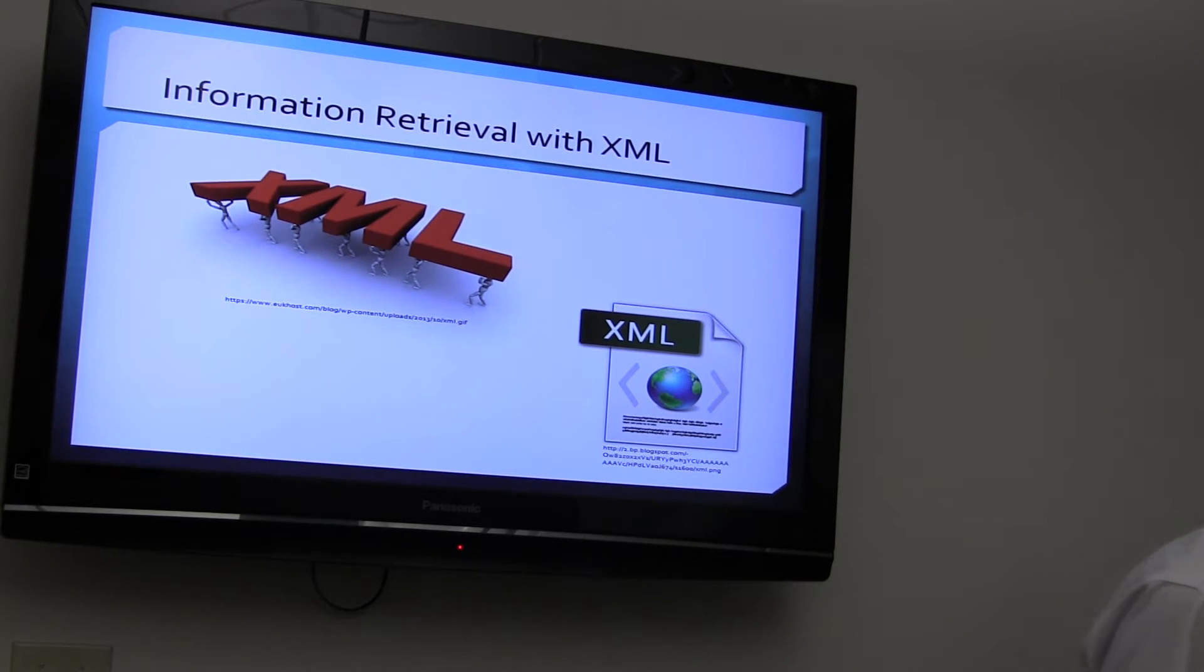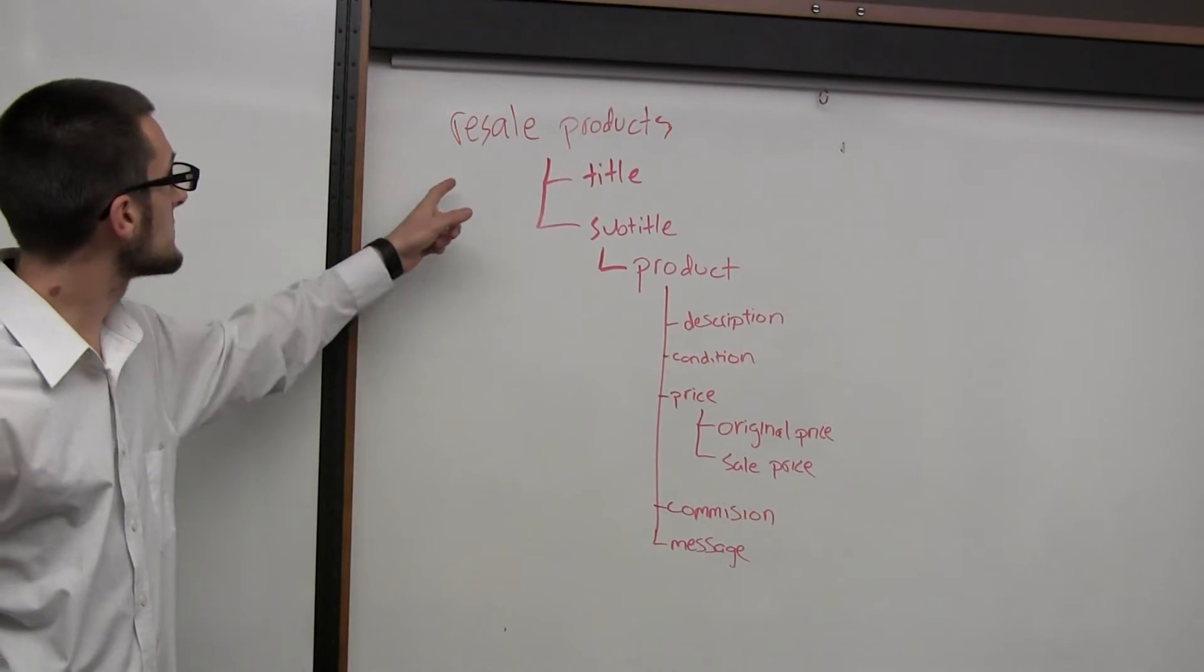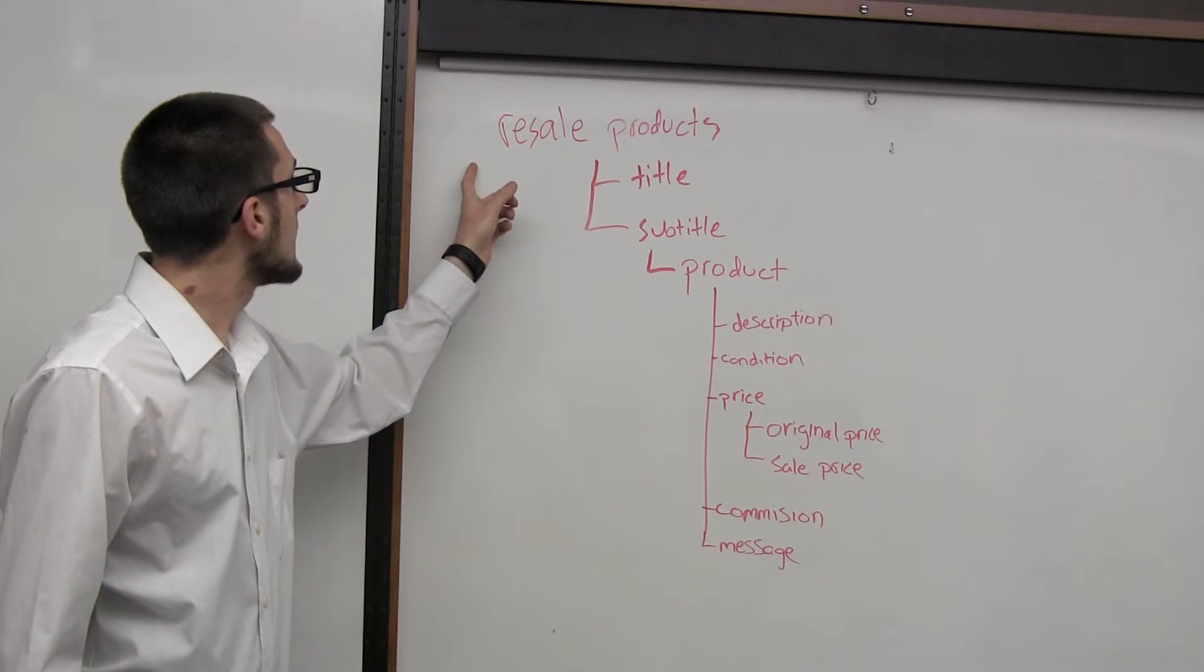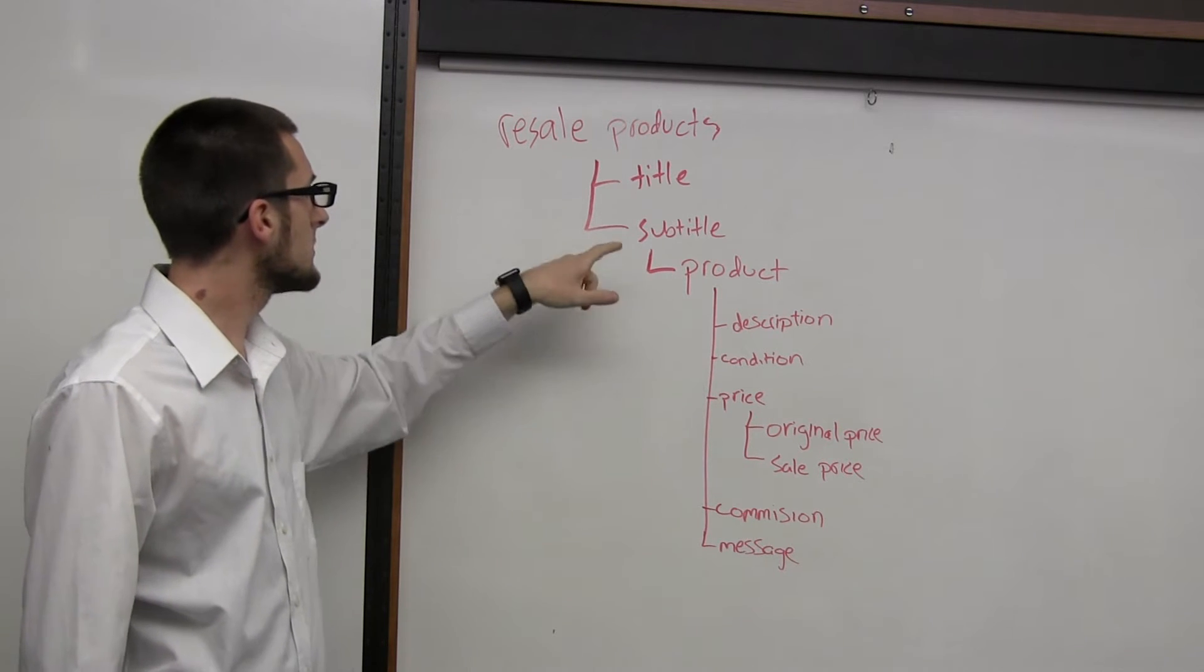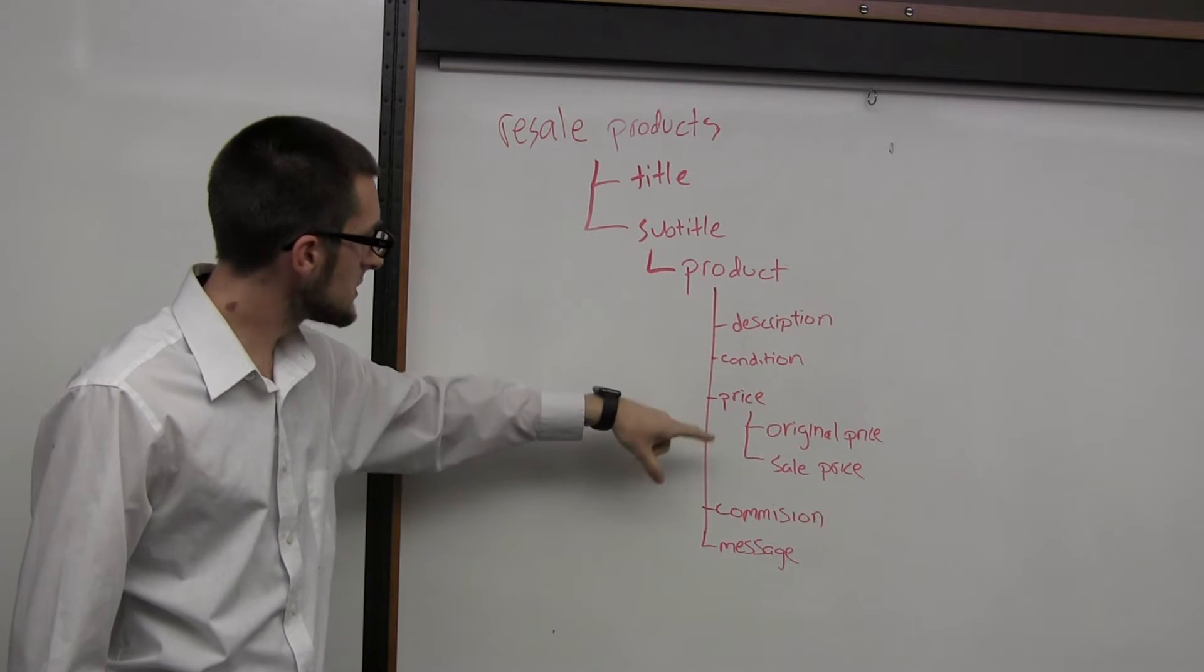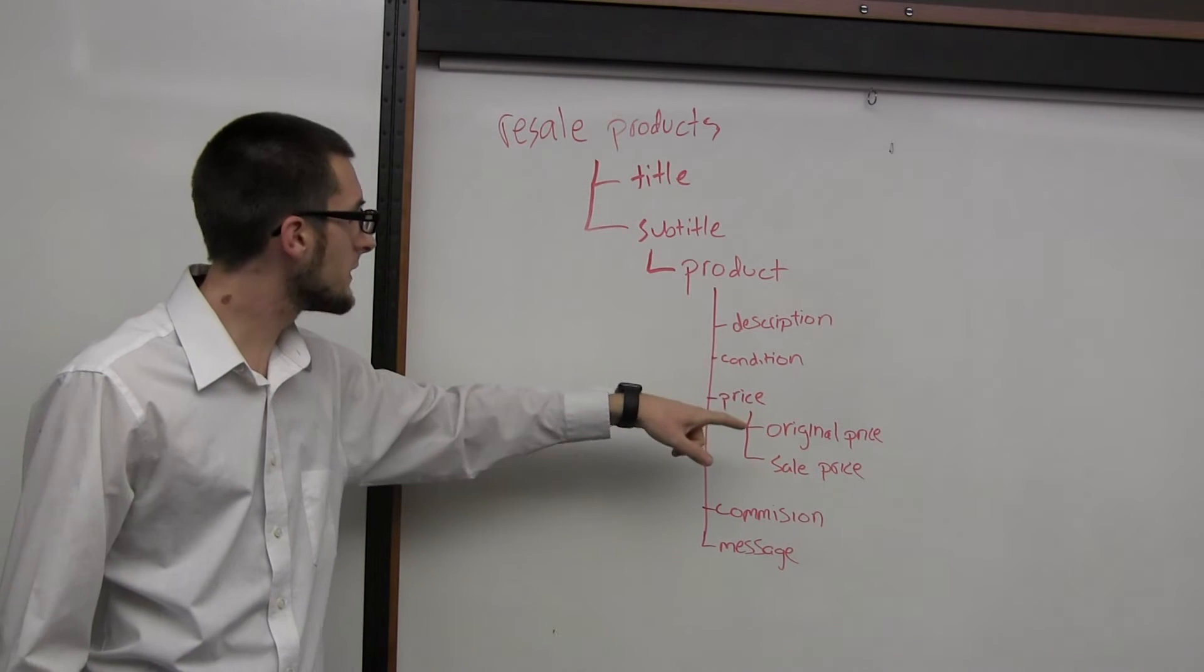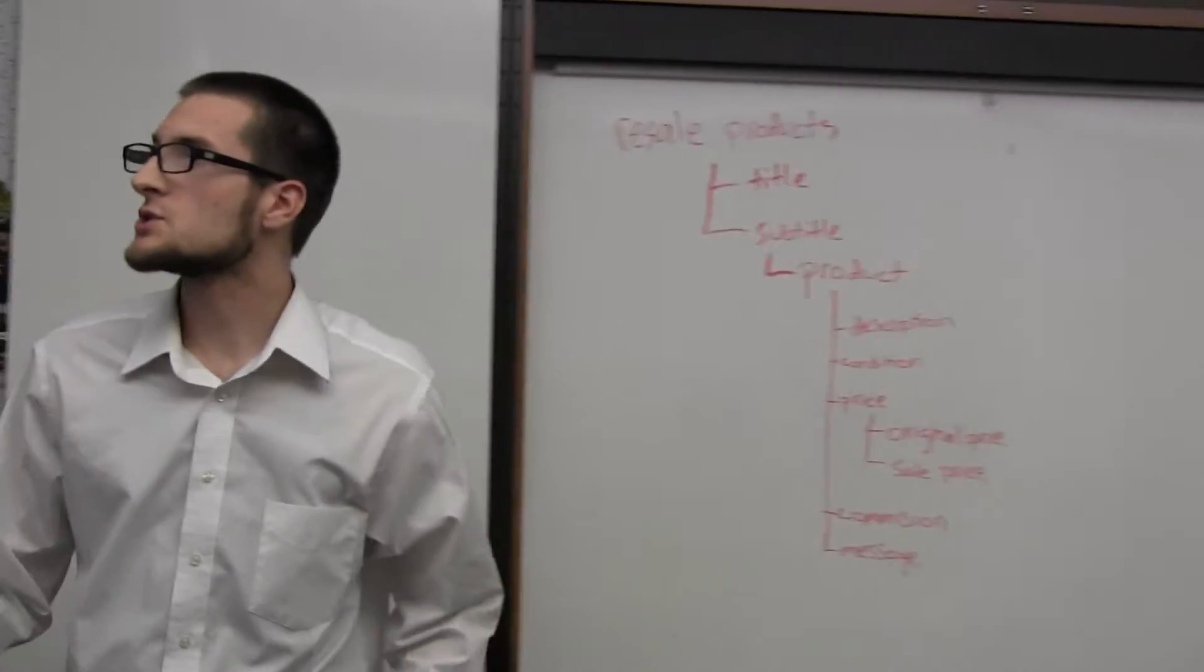I'm going to go over here and show you this. I was talking about the trees before, so one of my examples that we did in my class is the tree is this. The root element is the resale product, so underneath that's the title, subtitle. And under that is the product, and all of these, description, condition, price, commission, and message are elements of the product, while the attributes of price are original price and sale price.